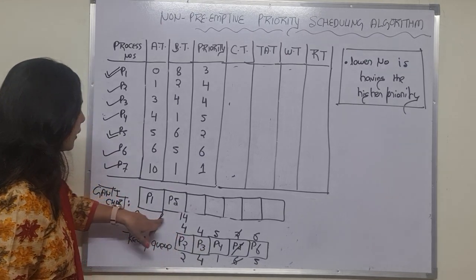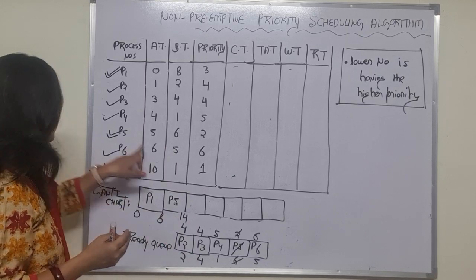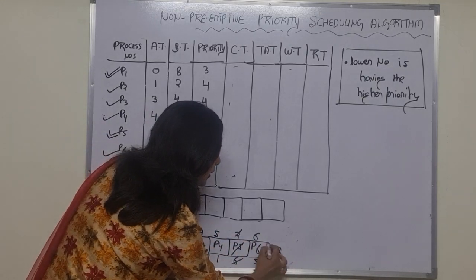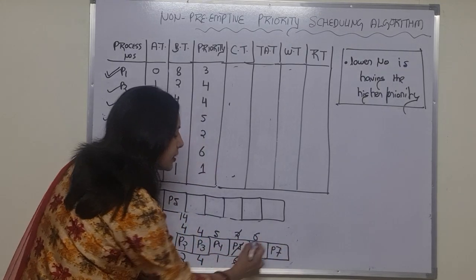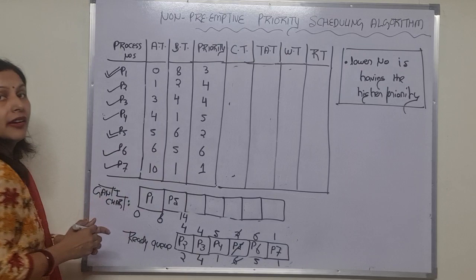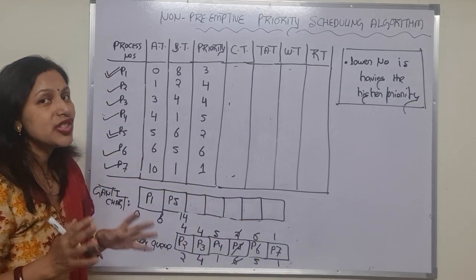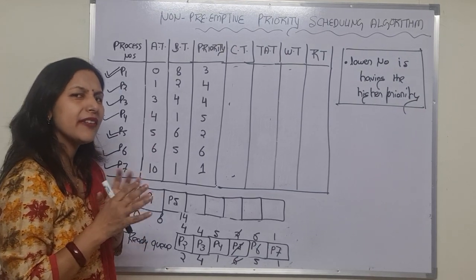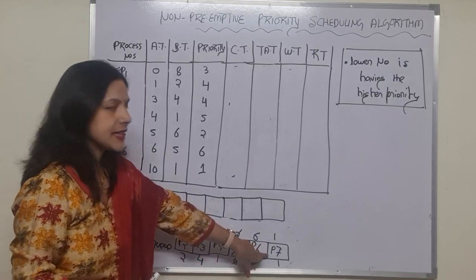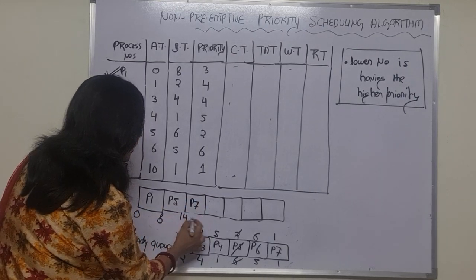Now, between time 8 and 14, is there any new process that has arrived? Yes — process number P7. So we write P7 in the ready queue. Its priority is 1 and its burst time is 1. Checking all processes in the ready queue, P7 has the highest priority — that is 1.